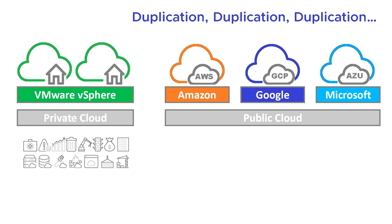So the theme here is that one of the core problems is duplication. If you look on the right-hand side with VMware vSphere, we've got a set of things under that private cloud — the things you need to run a cloud environment properly. Starting in the bottom left-hand corner, we've got a standardized, sensible way of doing compute, storage, networking and security.